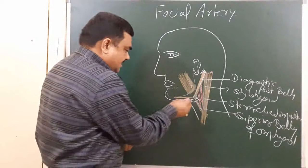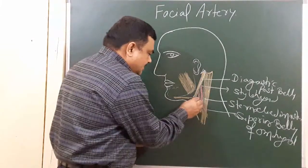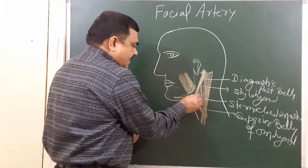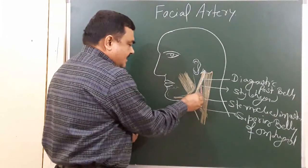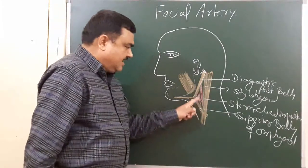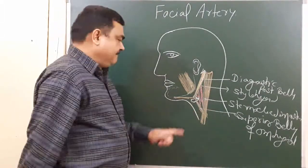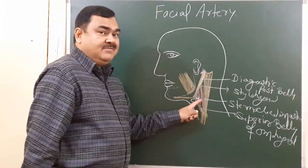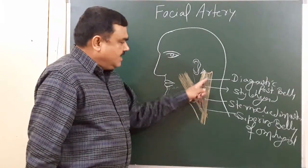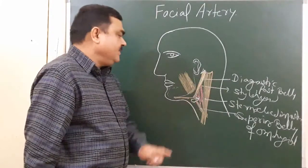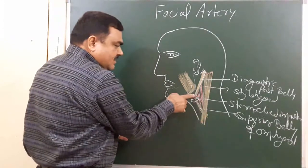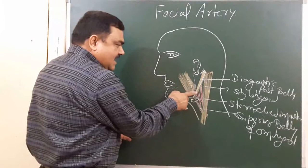Just above the level of the greater cornu, a branch arises — this branch is known as the facial artery. In this triangle, the external carotid artery gives five branches: ascending pharyngeal, superior thyroid, facial, lingual, and posteriorly the occipital branch. Now we'll discuss the facial branch. The facial artery passes deep to two muscles: the posterior belly of the digastric and the stylohyoid muscle.